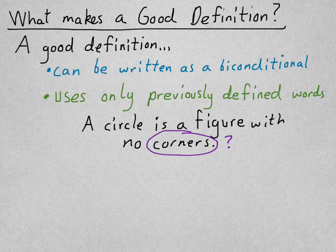This also has the problem of not being a biconditional. Because, you know, there are other shapes that have no corners that aren't circles. Like ellipses, which is another word for oval. So, just because it has no corners doesn't mean it's a circle. We could not write that as a biconditional. This is a bad definition.